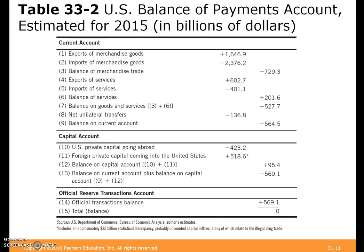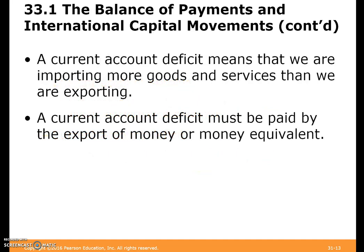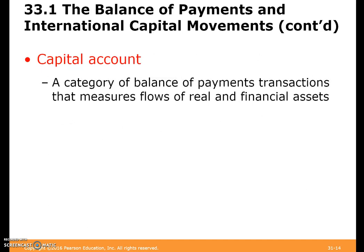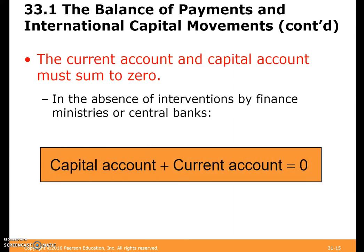Here's a table with a balance sheet for the current account, capital account, and official reserves. A current account surplus means net exports plus unilateral transfers plus net investment income is greater than zero; a deficit is the opposite. A current account deficit means we are importing more goods and services than we export, and it must be paid by the export of money or money equivalent. The capital account measures the flow of real and financial assets, and the current and capital accounts must sum to zero in the absence of interventions by finance ministries or central banks.